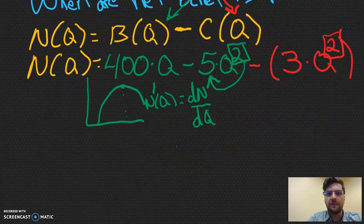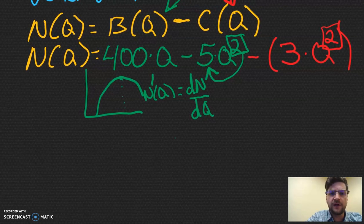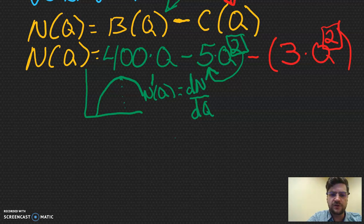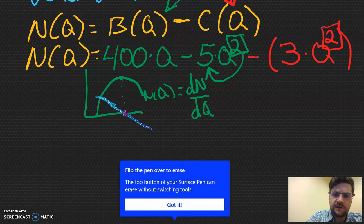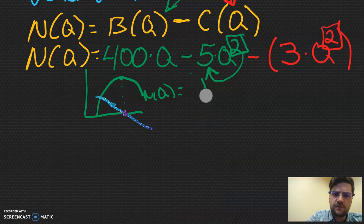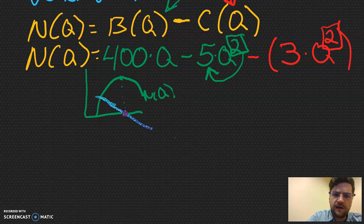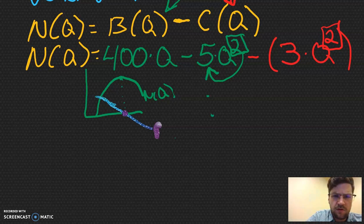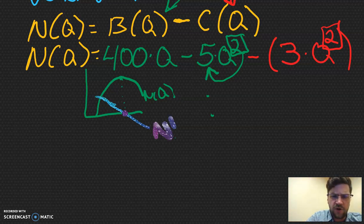The way that we find that highest point in the parabola is we take the derivative of that equation, this N of Q equation. We're going to take the derivative of that. So that would be called the N prime Q, or we could also think about it as the derivative of N with respect to Q. Again, don't let all this language scare you. There is a shortcut. But the kind of gist of it for those of you that have taken calc or pre-calc is that we have a parabola. We want to get the maximum of it.